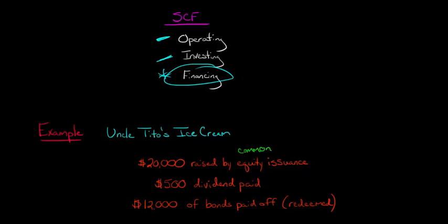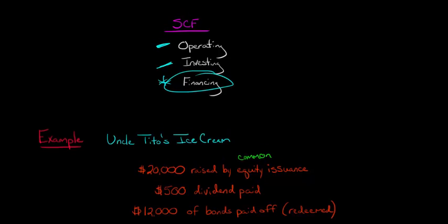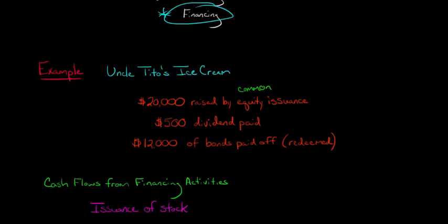And then, in addition to that, Uncle Tito's pays off $12,000 worth of debt. And sometimes when you pay off bonds, it's just another way of saying it to say that you redeemed the bonds. So you say that Uncle Tito redeemed $12,000 worth of bonds. So now let's put together this financing section of the statement of cash flows and see how it would look.